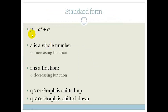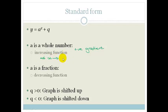Let's summarize. The basic standard form is y equals a to the x plus q. If a is a whole number, it has an increasing function — a positive gradient — meaning as x increases, y goes up. If a is a fraction, it has a decreasing function — a negative gradient — meaning as x increases, y goes down. If q is greater than 0, the graph shifts up. If q is less than 0, the graph shifts down.